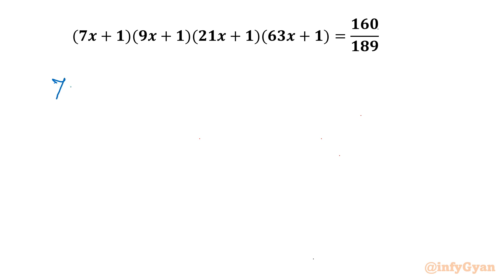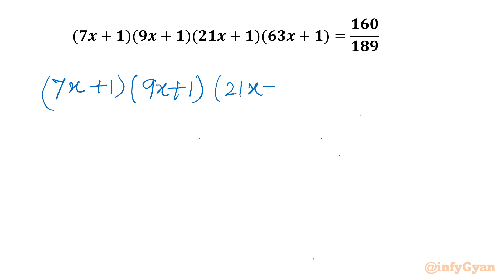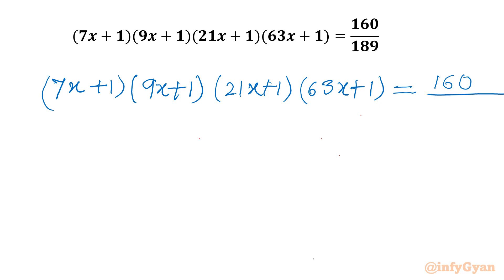I will write our equation: (7x+1)(9x+1)(21x+1)(63x+1) = 160/189. I can factorize the denominator: 9 times 7 which is 63, times 3, so it is 189.